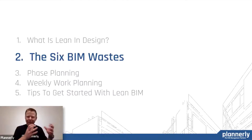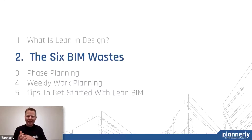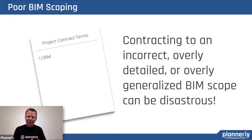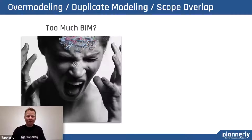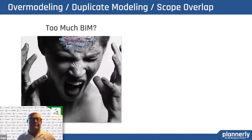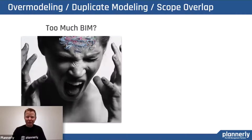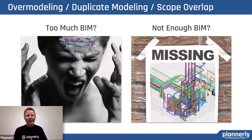What we need to do is figure out what in our BIM management is wasteful and begin to stop doing that and start doing more valuable things. We've got six BIM wastes to introduce. The first is poor scoping — how do you run a workflow contracted for an incorrect, overly detailed, or overly generalized scope? It can be completely disastrous. The second is over and under production — too much modeling at the wrong time can be really painful because it creates wasteful rework, and if the customer doesn't get what they need, they can't do their work.